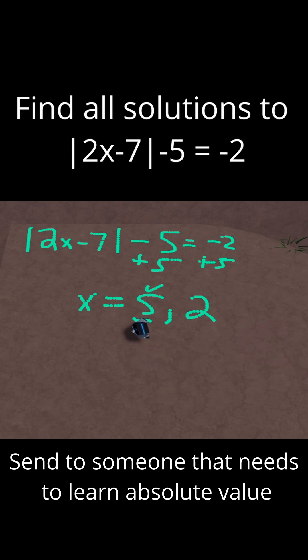Let's check x equals 2 now. If I do 2 times 2 minus 7 minus 5 is equal to negative 2. 2 times 2 is just 4. 4 minus 7 is negative 3. And then negative 3 in absolute value becomes positive 3. And we're back to 3 minus 5 is equal to negative 2, which is indeed true. So therefore, x equals 2 is also a valid solution. So these are both of our answers.